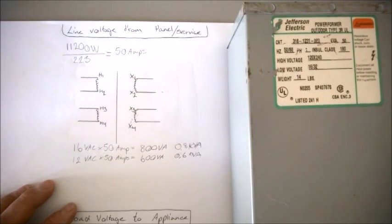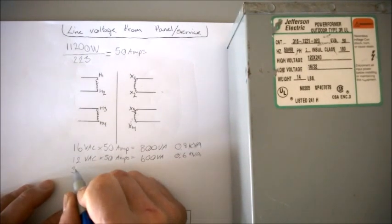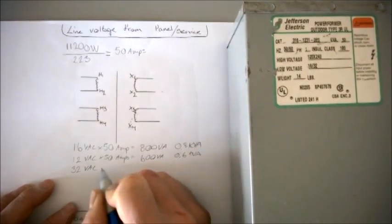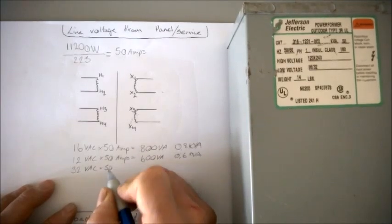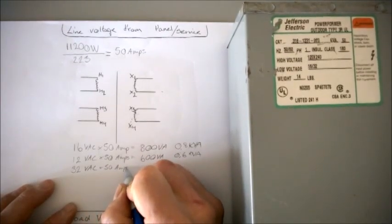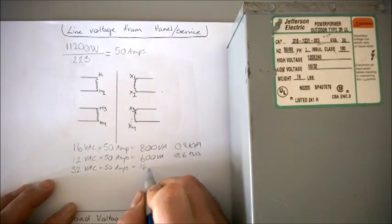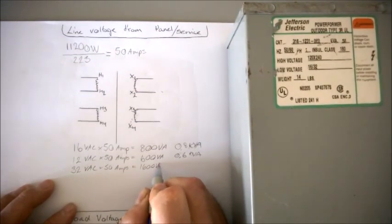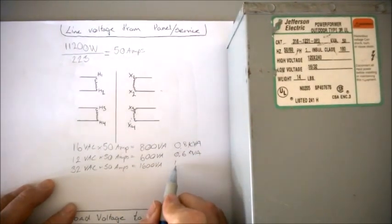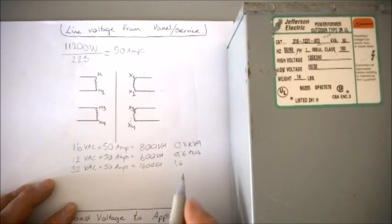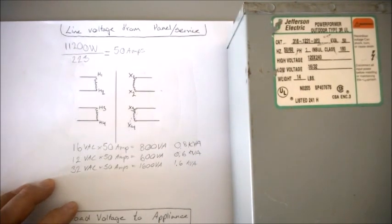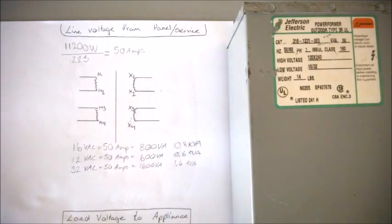That's pretty interesting, but let's go all the way up here to 32 volt AC. Let's see, 50 amps. And now all of a sudden we're up in 1600 VA, 1.6 KVA. And our first matching size to that is a 2.0.